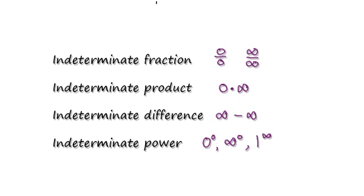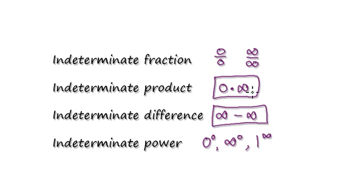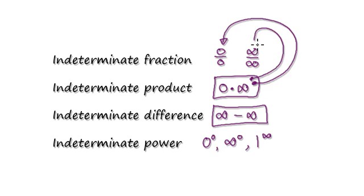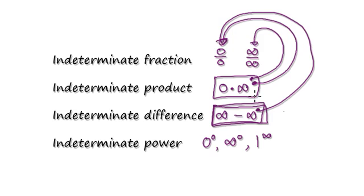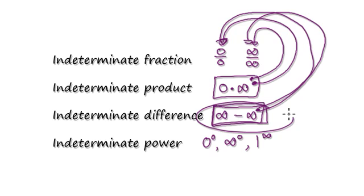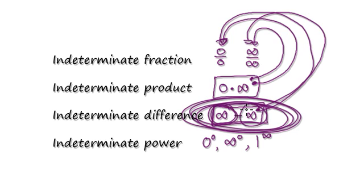Let's look at another example. In this video we're going to look at a case where it's infinity take away infinity. In some of the early videos we looked at 0 times infinity — to evaluate that we would turn it into a fraction: either 0 over 0 or infinity over infinity. Similarly, to evaluate infinity take away infinity, we would turn this into either 0 over 0 or infinity over infinity.